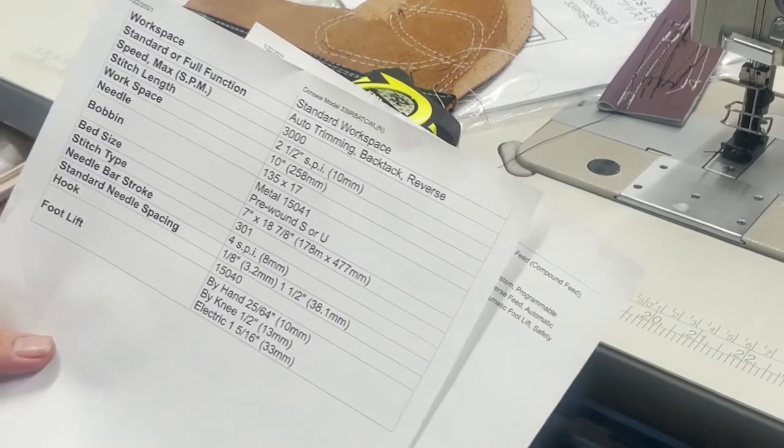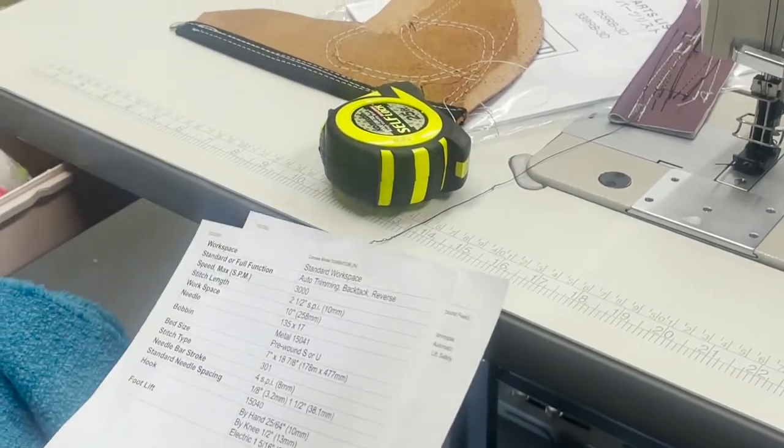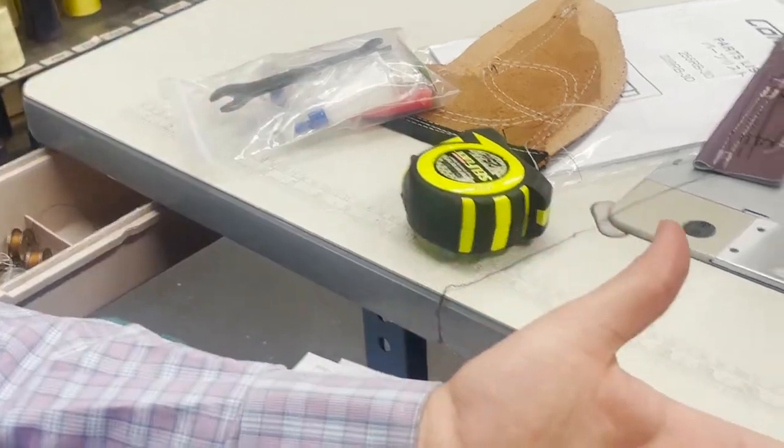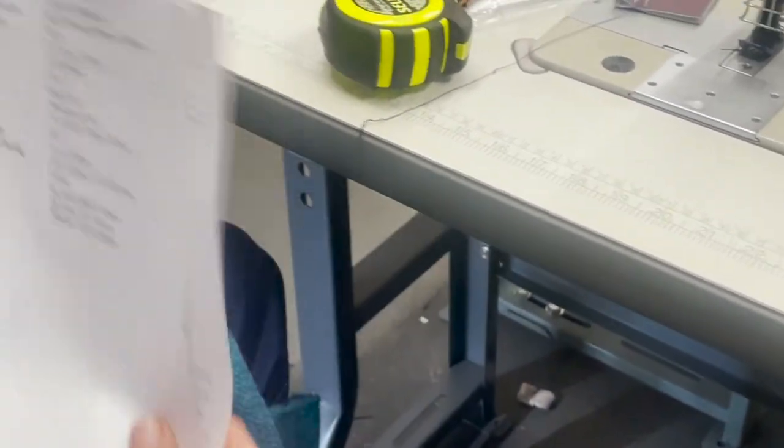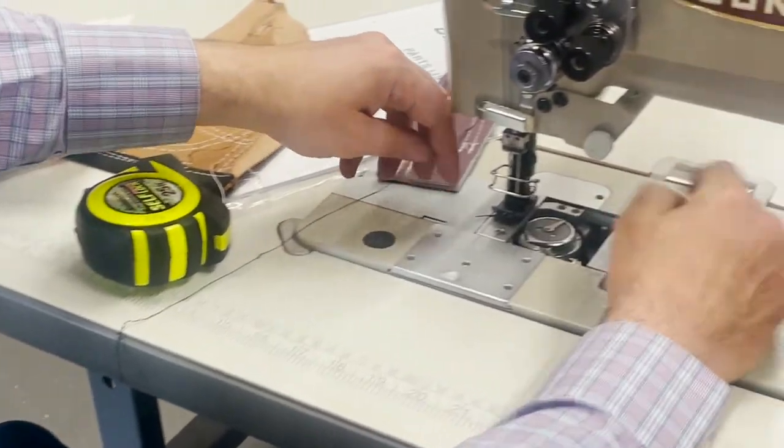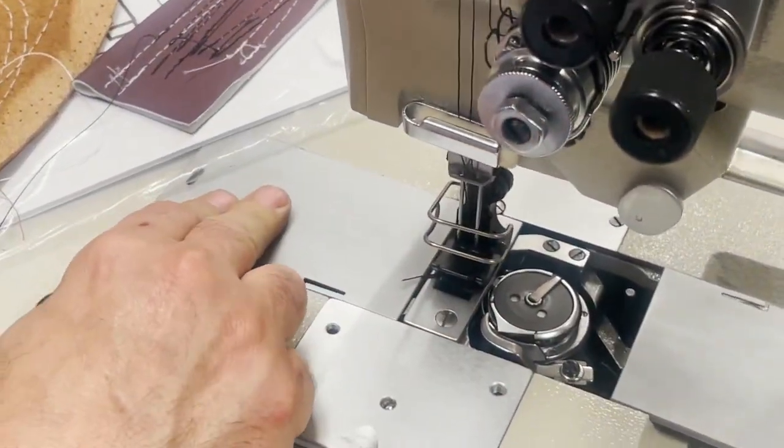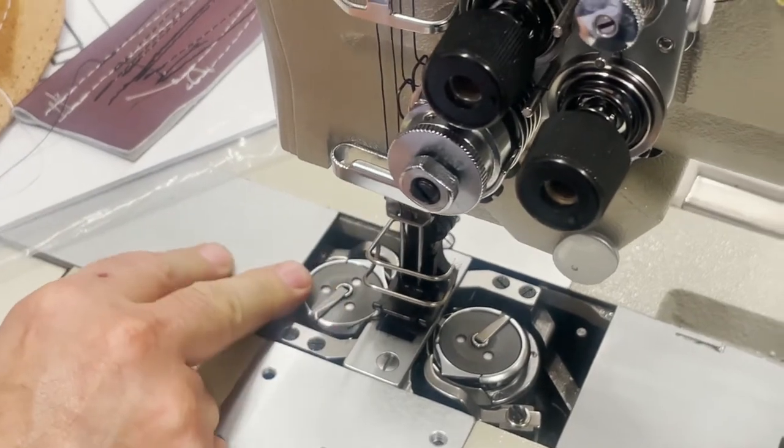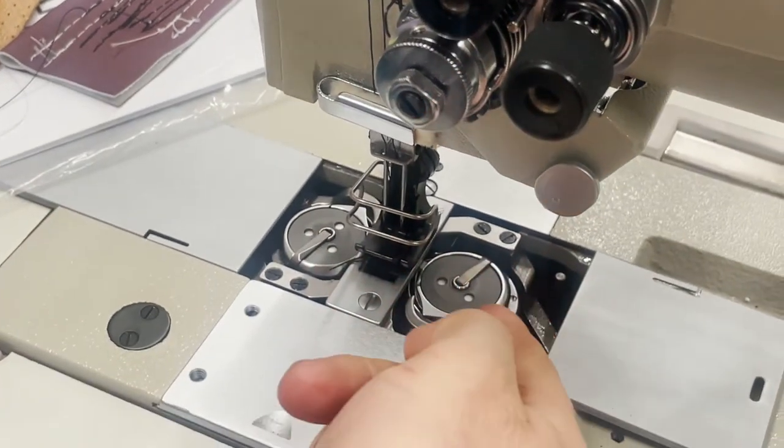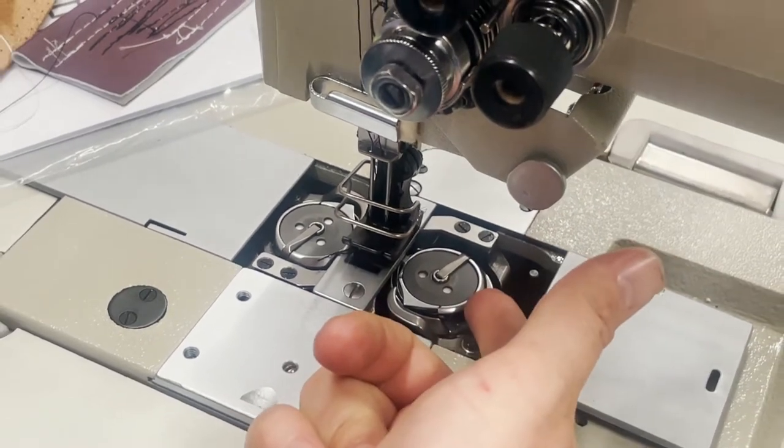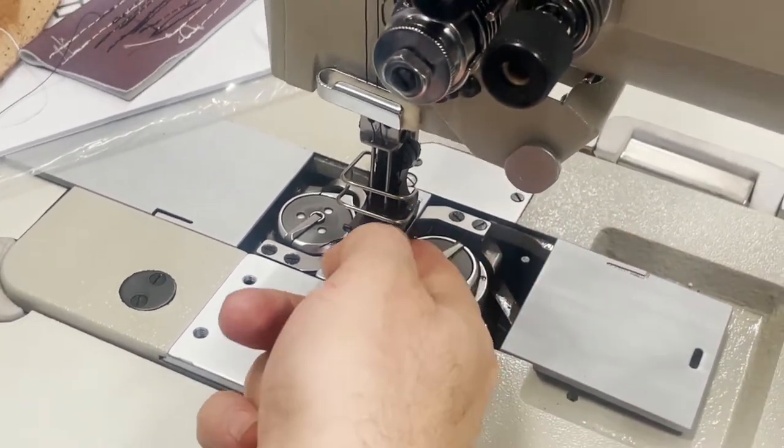The needle I told you is 135 by 17. The bobbin is 15041S or U bobbins here, the big monster bobbin. Obviously when you have two needles you have two bobbin cases, two hooks, one to the right, one to the left. And this is it, this is the hook, this is the bobbin. I mean there is no bobbin case, it's just a hook and these are the bobbin. You need two of them, one you need two thread.